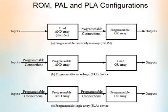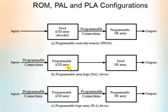The main difference between programmable logic devices is in the placement of AND and OR gates in the circuit. Look at this diagram. The first one is programmable read-only memory — it has a fixed AND array, which acts as a decoder, and also a programmable OR array. In programmable array logic PAL, there is a programmable AND array and a fixed OR array. Whereas in programmable logic array PLA, it has both a programmable AND array and a programmable OR array.